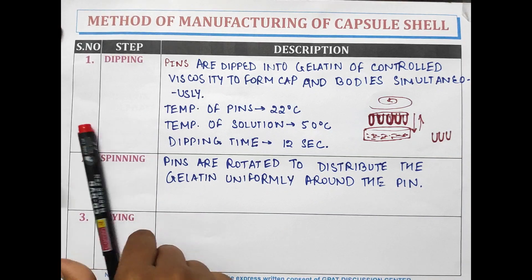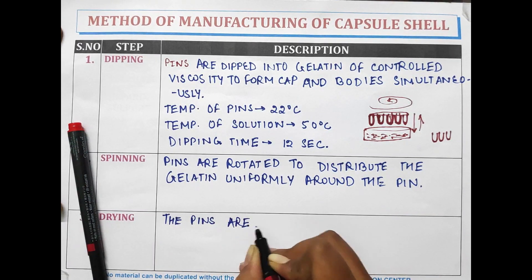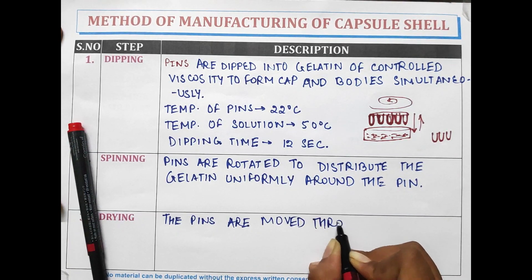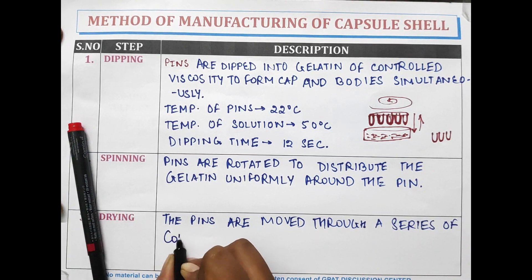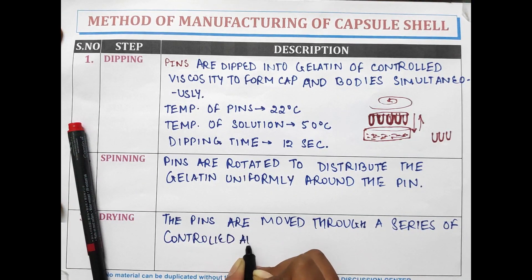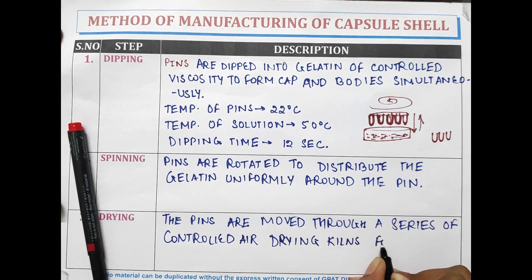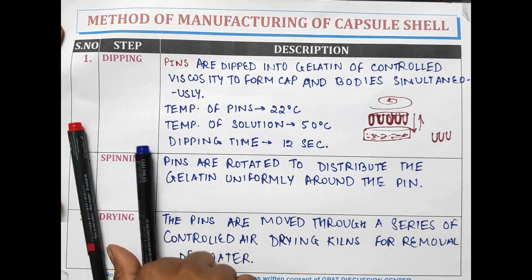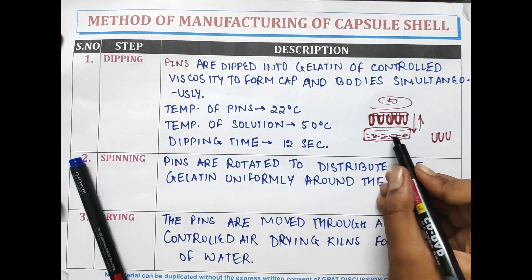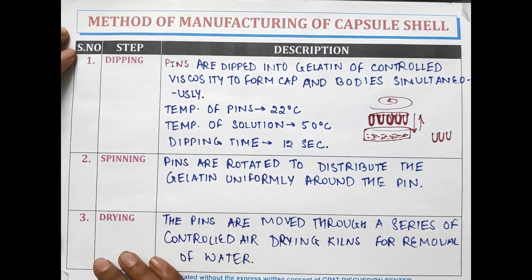After spinning, drying is performed. In the drying process, the pins are moved through a series of controlled air drying kilns for removal of water. As the gelatin solution is coated onto the pins, it is mandatory to remove the water to form gelatin shells, so the drying process is performed.